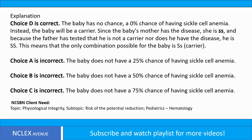Choice D is correct. The baby has a 0% chance of having sickle cell anemia. Instead, the baby will be a carrier. Since the baby's mother has the disease, she is SS, and because the father tested negative as a carrier and does not have the disease, he is SS. This means the only combination possible for the baby is SS — carrier. Choices A, B, and C are incorrect, as the baby does not have a 25%, 50%, or 75% chance of having sickle cell anemia.